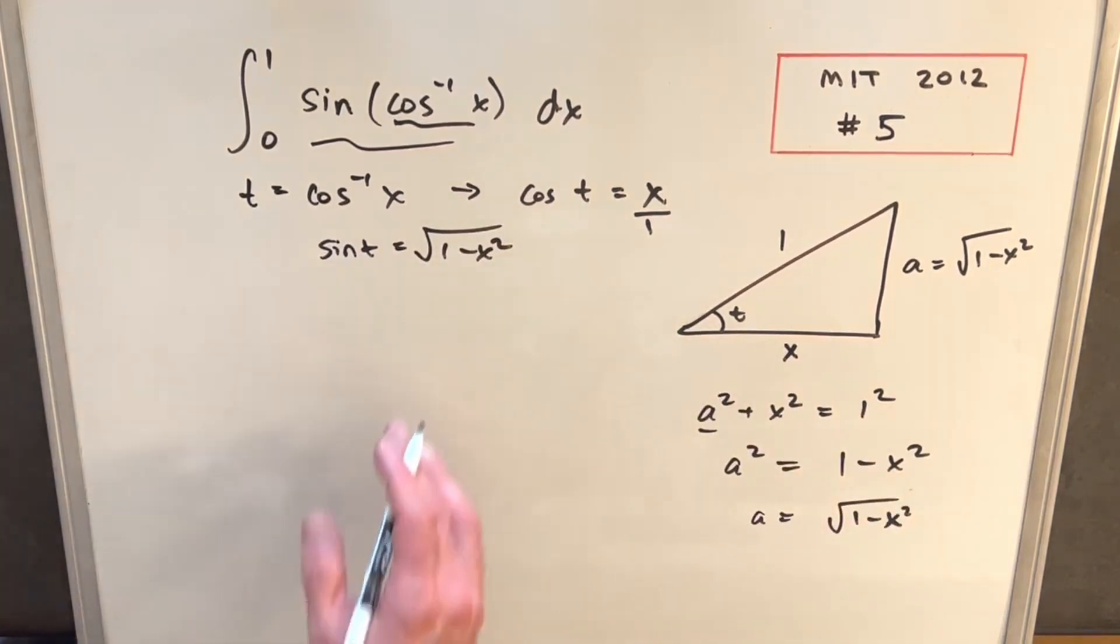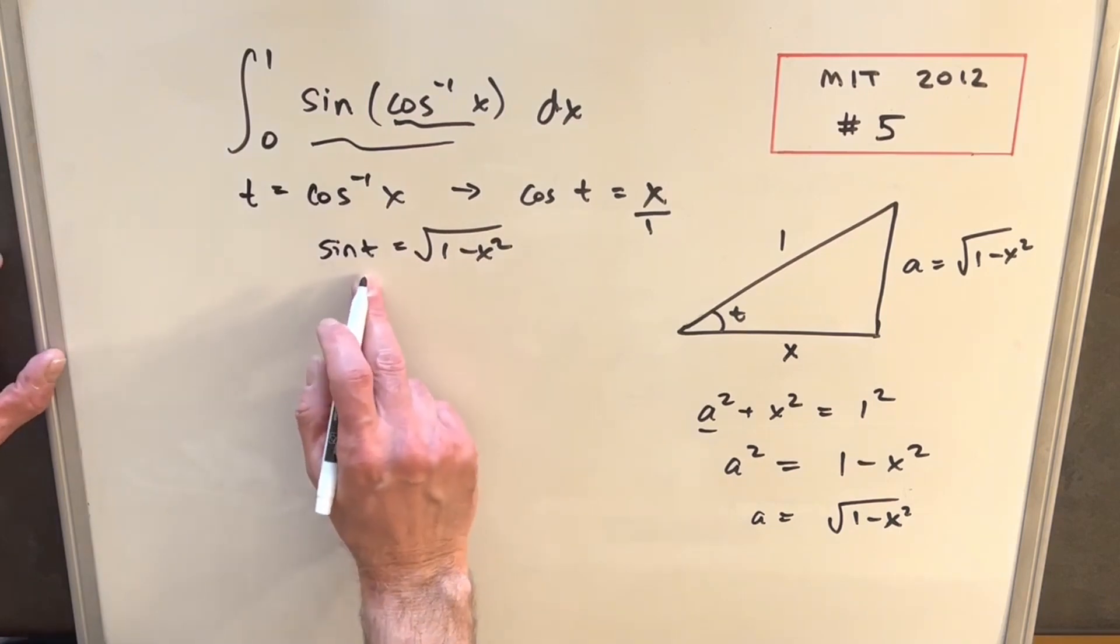What that allows us to do is we can just rewrite this integral. We don't have to do a substitution. We don't have to update our bounds. We can just plug in for sine of t, this square root of 1 minus x squared value.